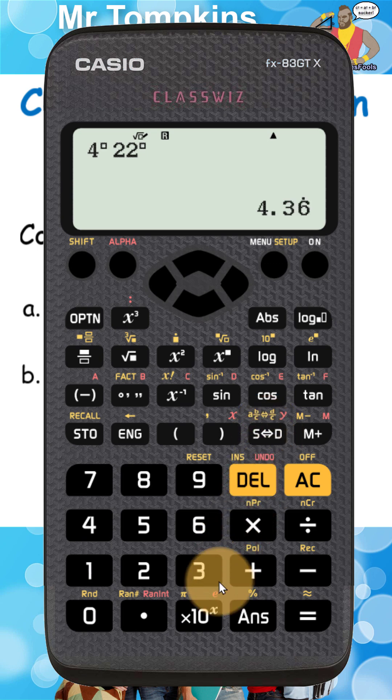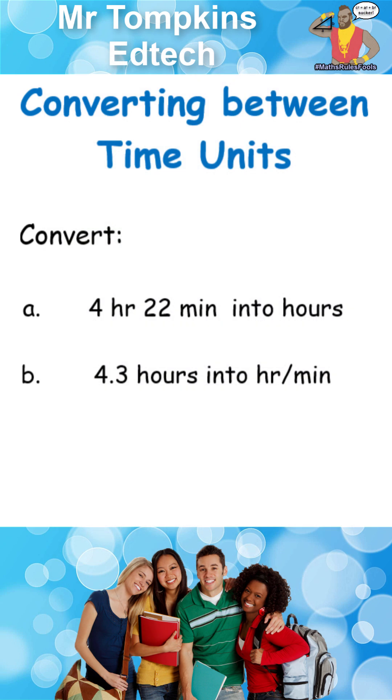And if I press it again, I get a decimal, which is 4.36667. I'm going to round that off to three significant figures and write down 4.37.